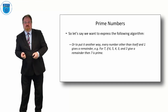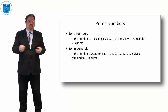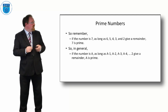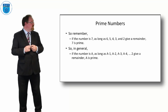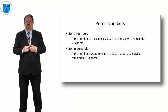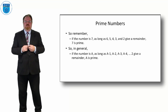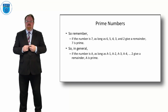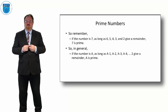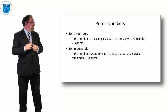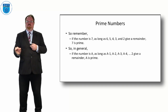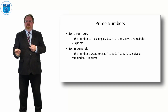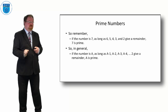So let's look at the pseudocode. The general principle is: if the number is a, and if a minus 1, a minus 2, a minus 3, a minus 4, all the way down to 2 — if all of those divisions give a remainder, then we say a is prime.